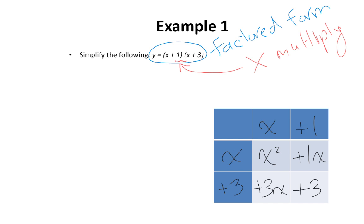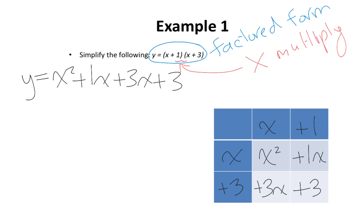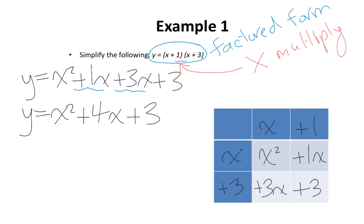We're going to collect like terms. I have x squared, positive 1x, positive 3x, and positive 3. The 1x and 3x are like terms, which means we can collect them. Everything else stays the same. So that gives me x squared plus 4x plus 3. And y equals x squared plus 4x plus 3 is the final answer.